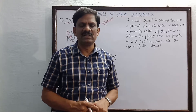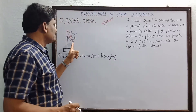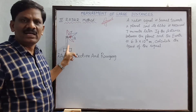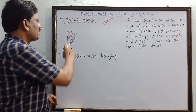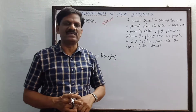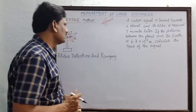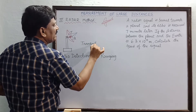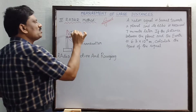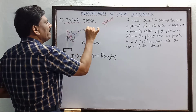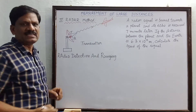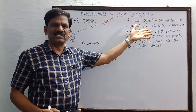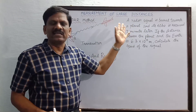You can see this type of dish antenna — this is the radar antenna. This radar antenna has two electronic devices: one is called a transmitter. The transmitter is used to send radio waves, so radio waves are sent towards a distant object like an aeroplane or a distant planet.